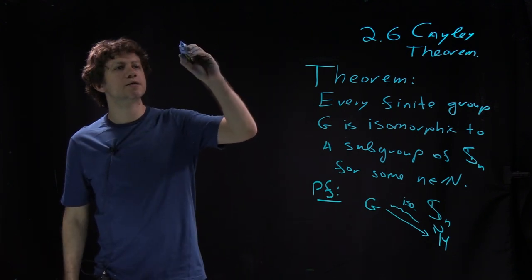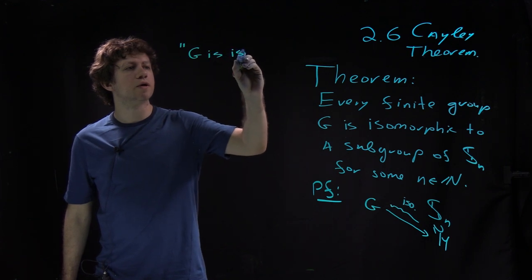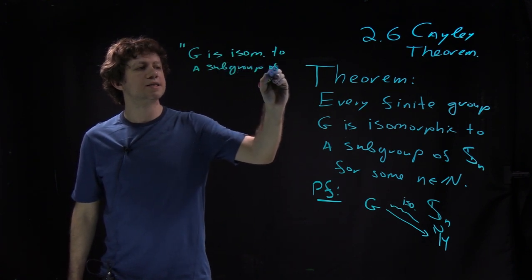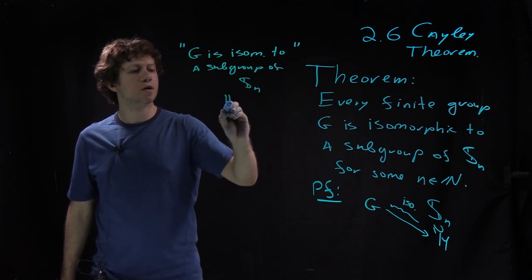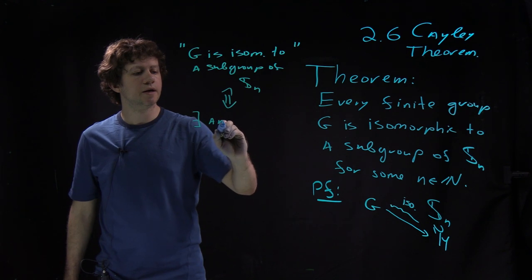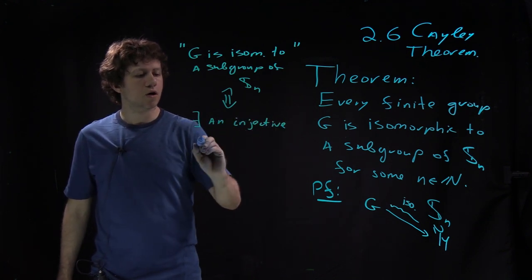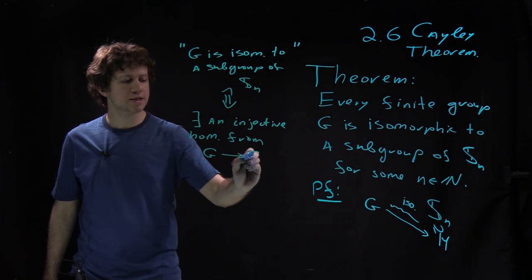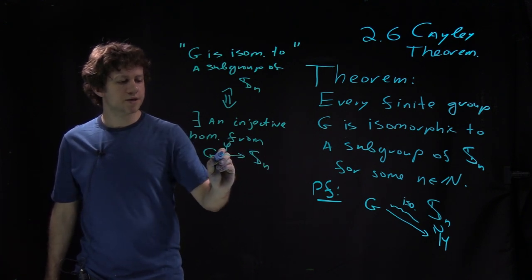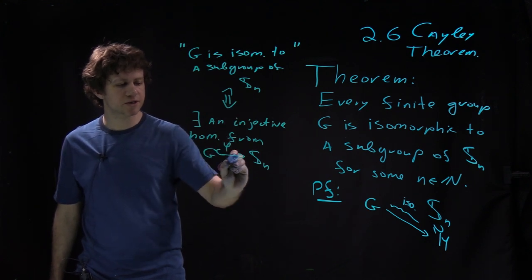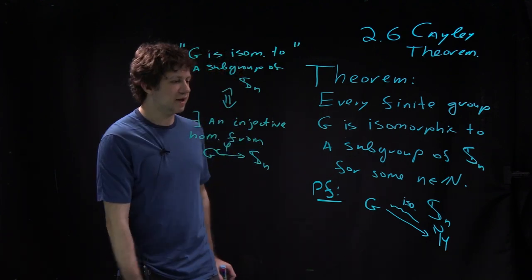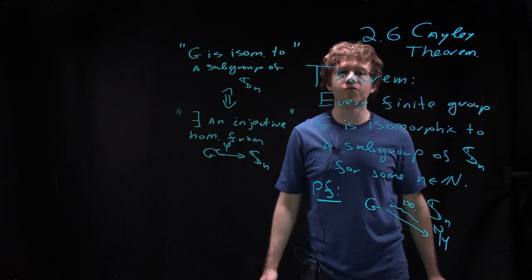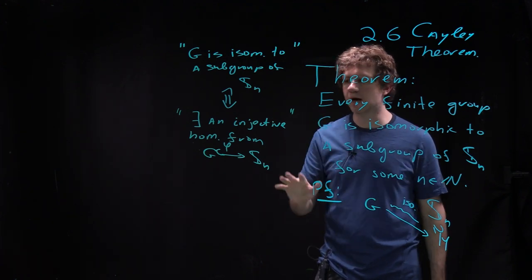So basically the idea is G is isomorphic to a subgroup of S_n, and it's equivalent to there exists an injective homomorphism from G to S_n. So let me call it phi. And usually injective homomorphisms are sometimes denoted by this hooked arrow. So this fact is completely formal, obvious, but let me still explain clearly the proof.